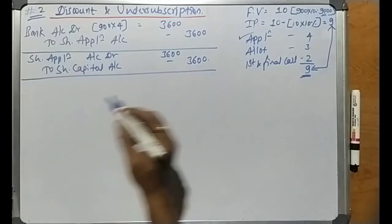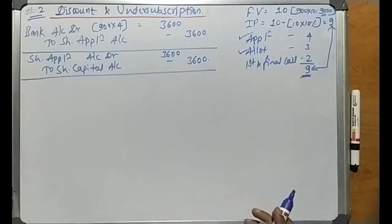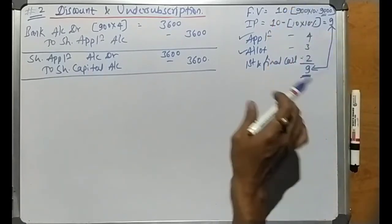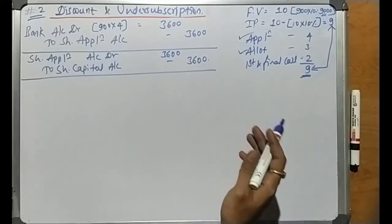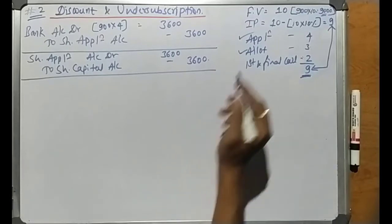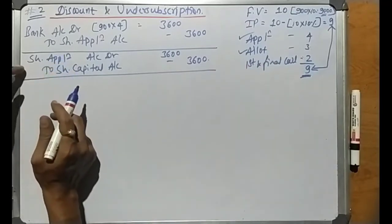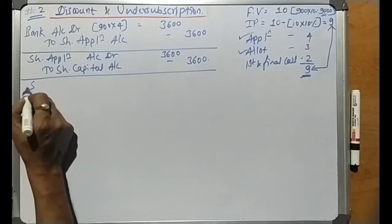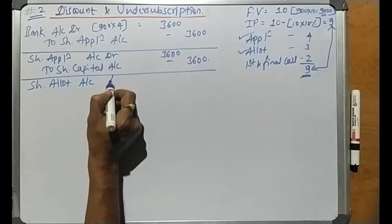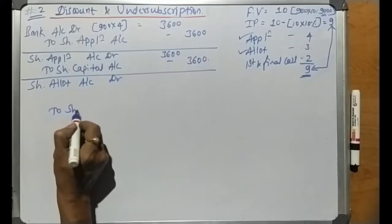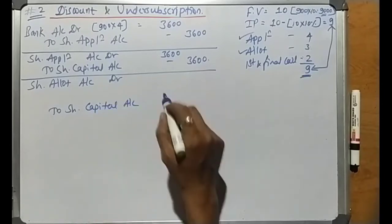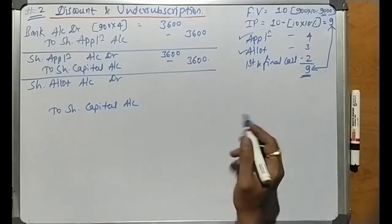The next stage is the allotment stage. Since these shares are issued at a discount, we need to adjust the discount at the allotment stage. The journal entry is Share Allotment Account debit to Share Capital Account, and also to Discount on Issue of Shares Account — because discount is a loss, it is debited as per the nominal account rule.